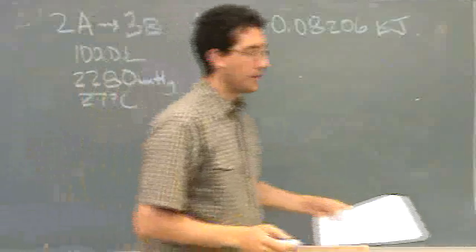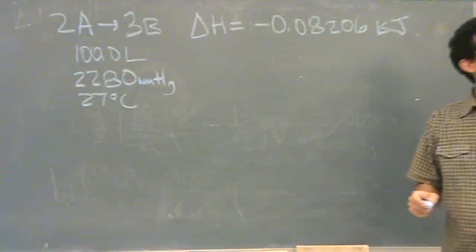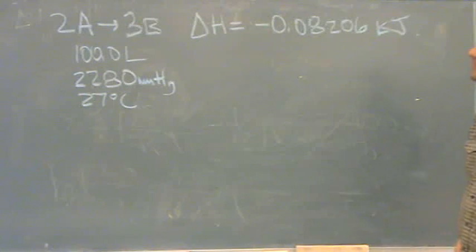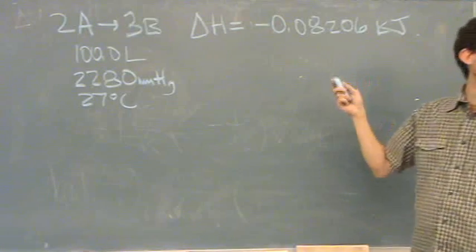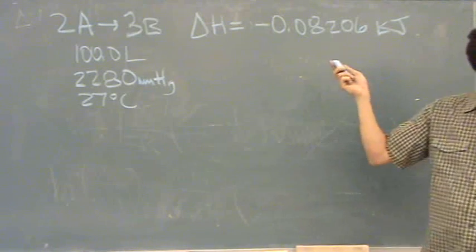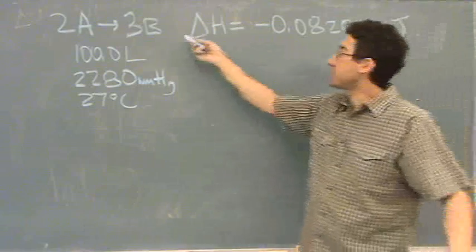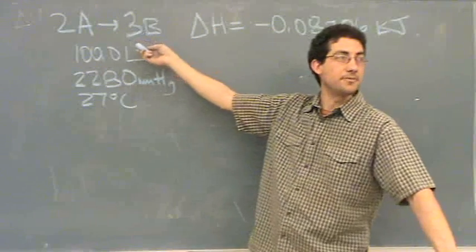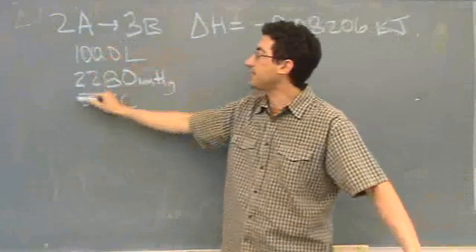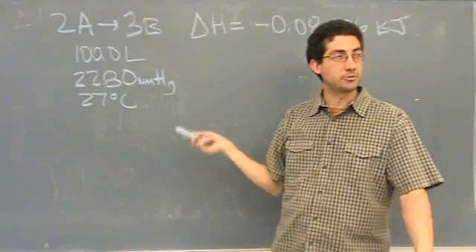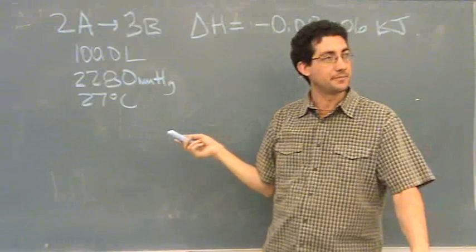Okay, this one's different than what we looked at before because they're actually looking for delta H, right? And we have delta H. This is delta H for just this reaction in general. We want it specifically for these conditions. This is really a conversion problem.